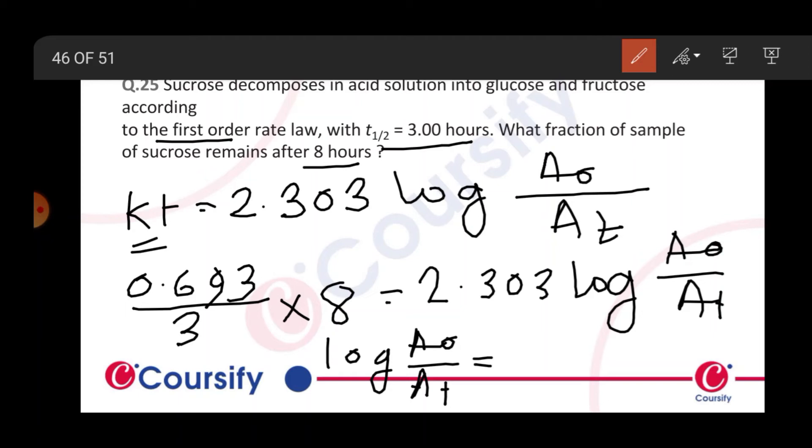kt equals 0.693 divided by 3, times 8, equals 2.303 log of A0 by AT. So log of A0 by AT equals 0.8024.